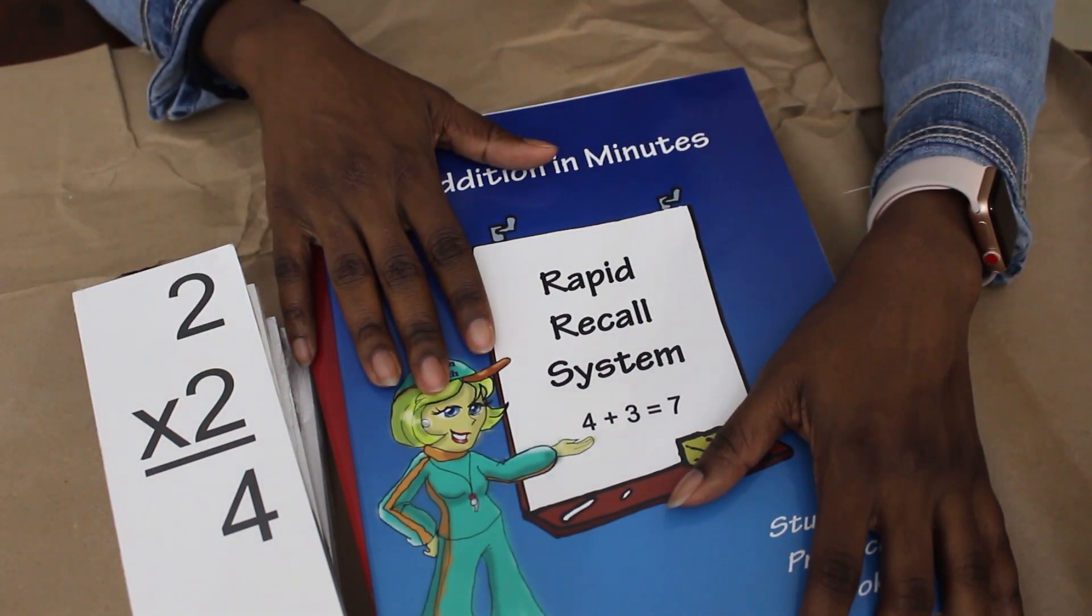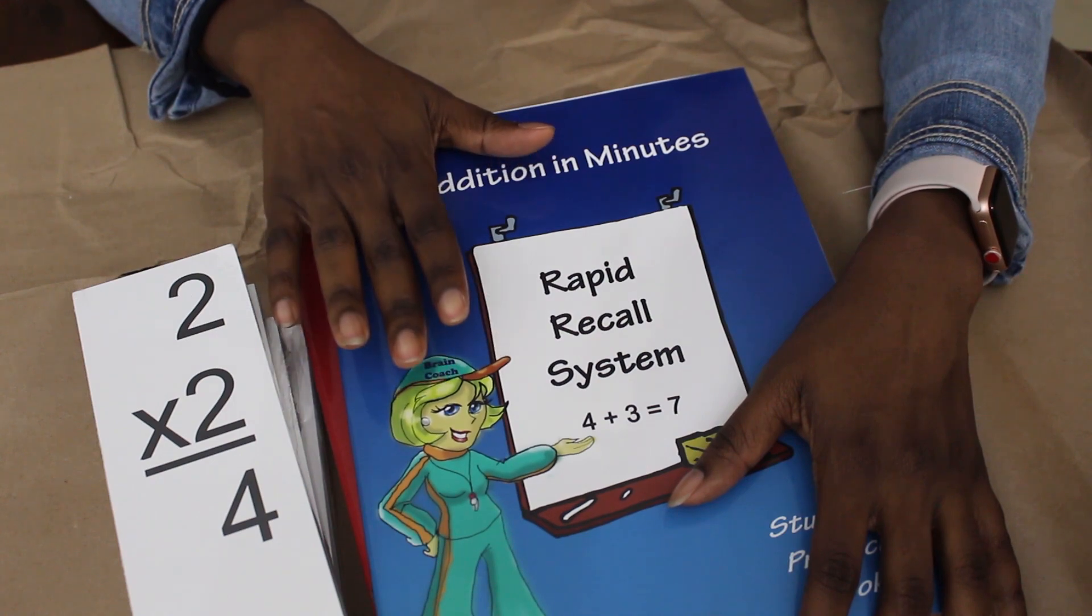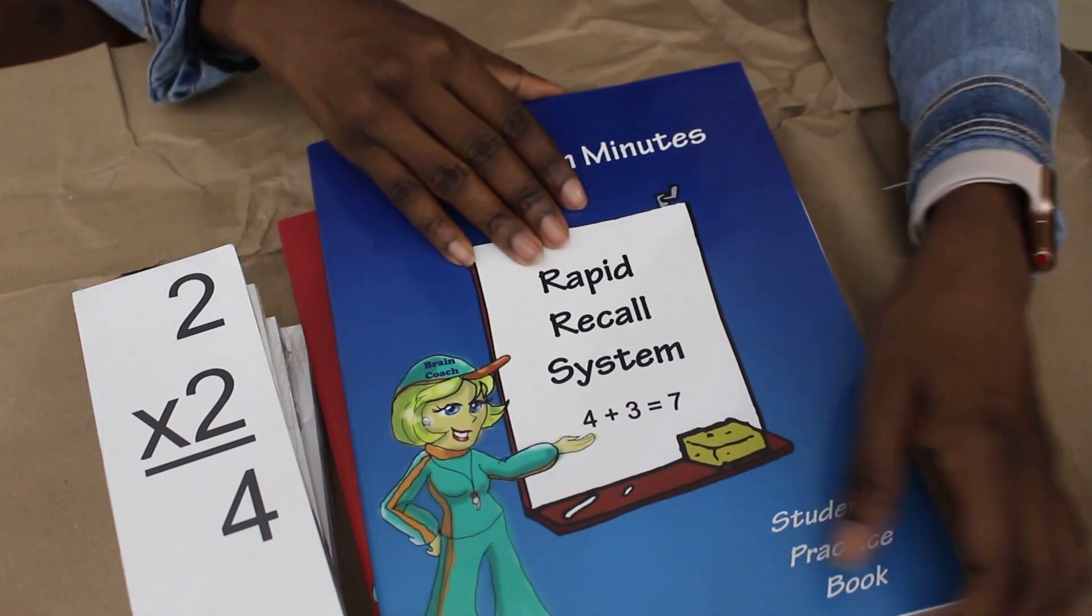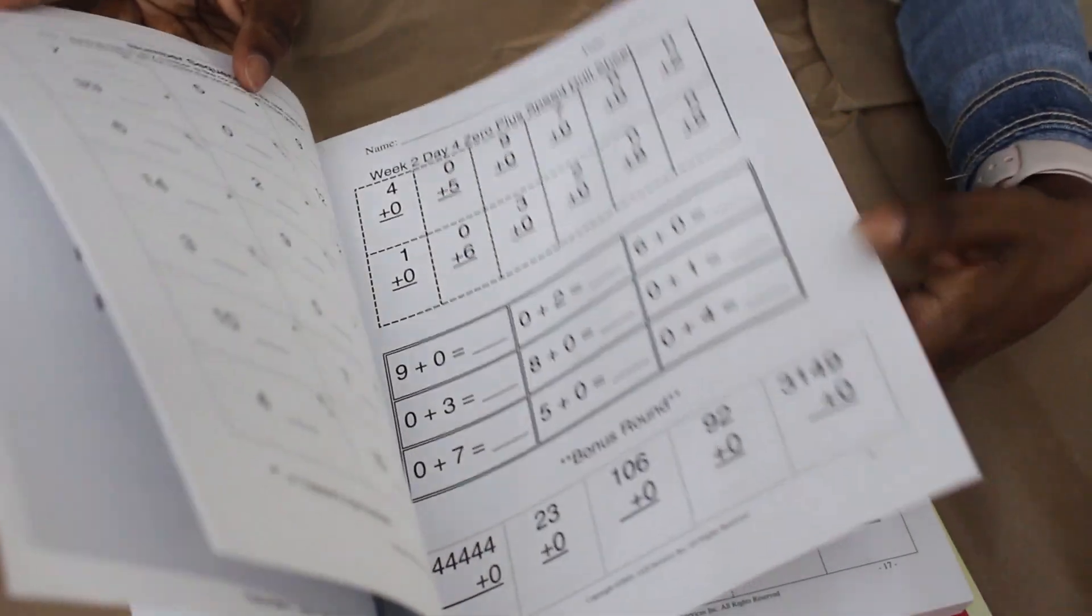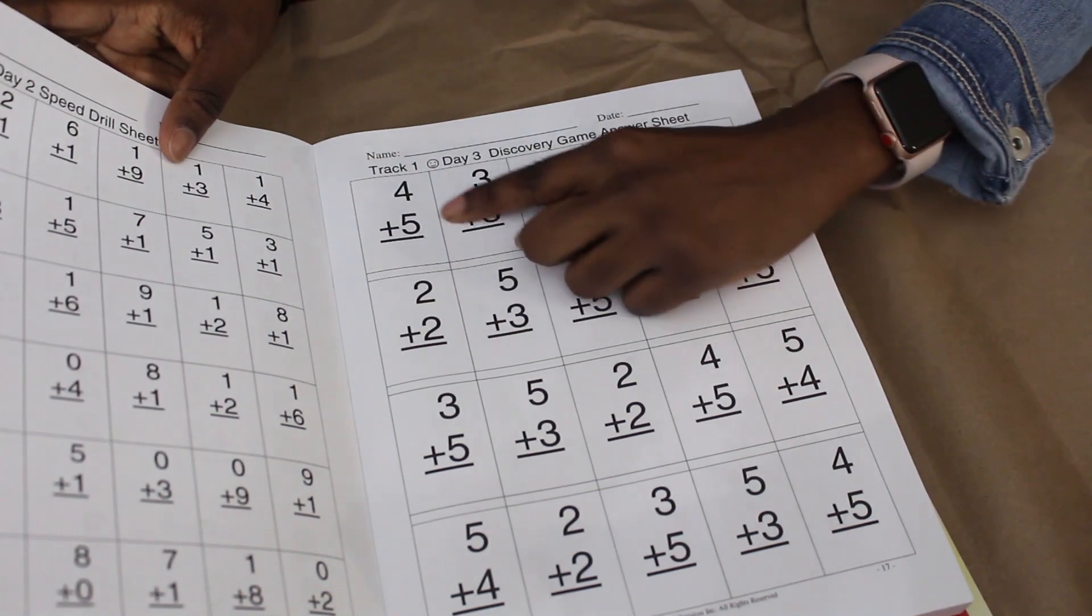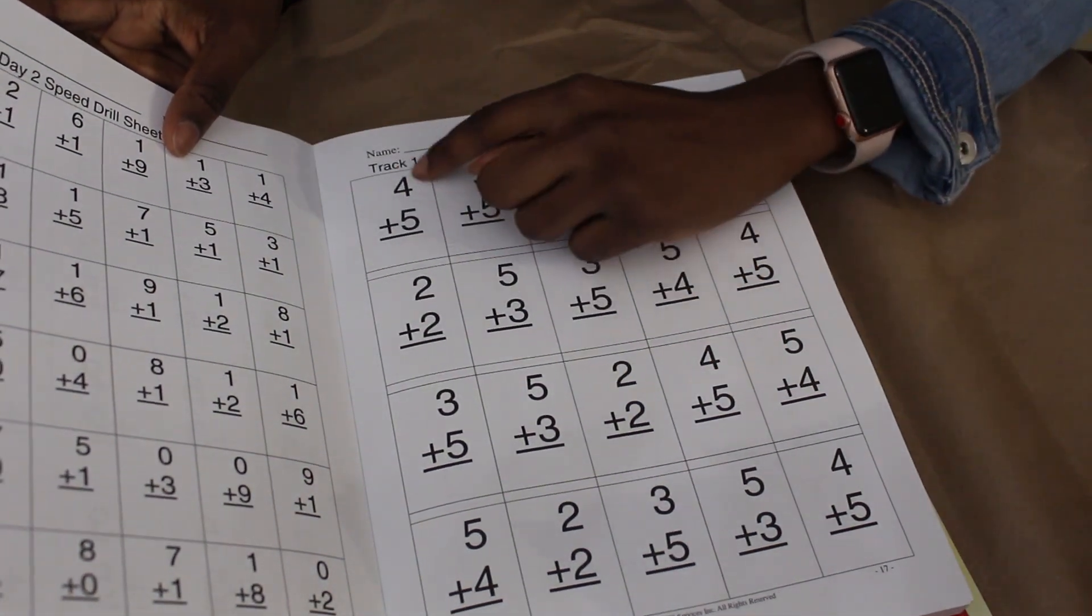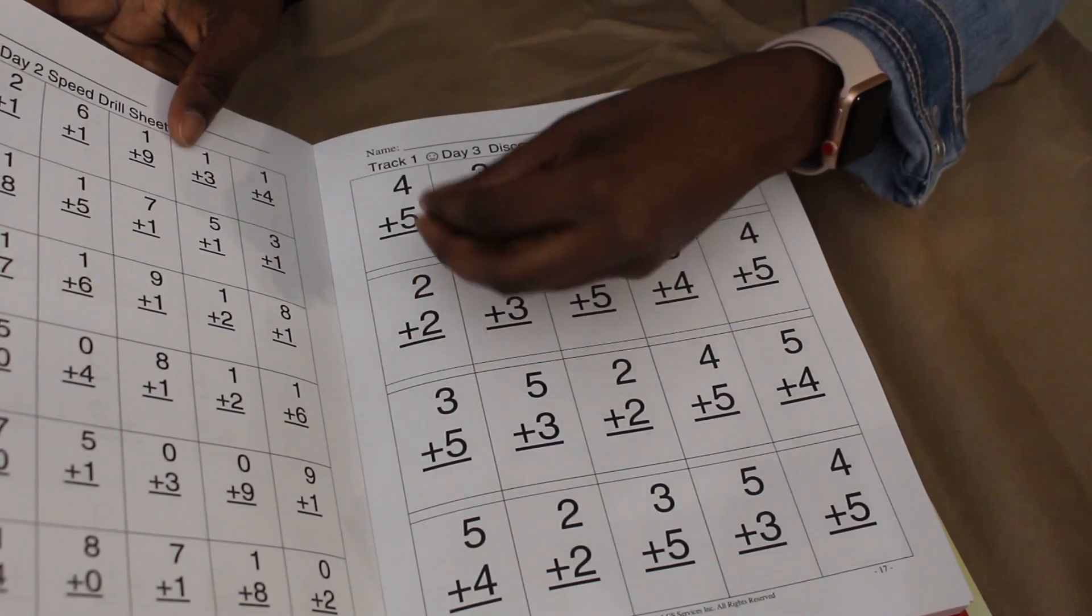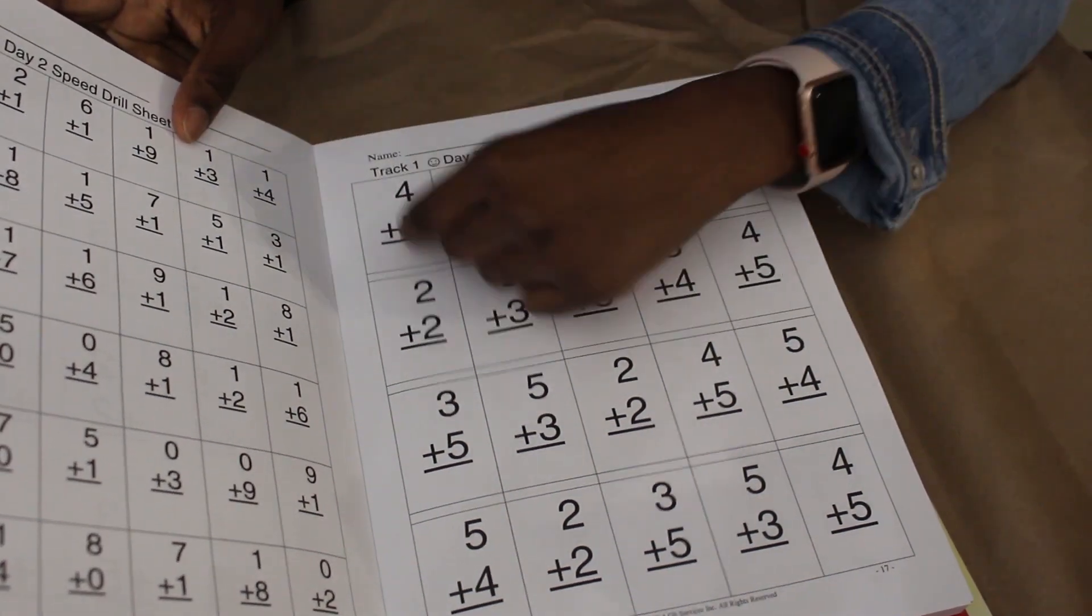which is where they listen and write. They use these different sheets and listen to the math fact and just write it. So it will tell them 'four plus five equals nine' and they'll just write it down.